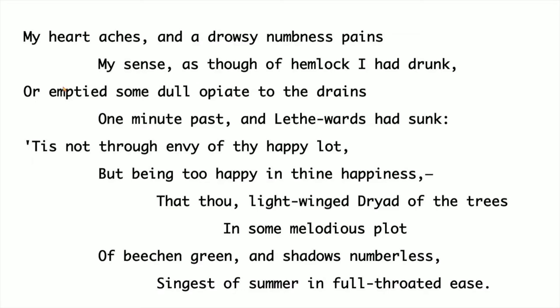In addition to the lexis — the choice of words — the contrasting elements of this stanza are signalled in other ways. For example, the alliterative D and DR sounds of 'drowsy,' 'drunk,' 'dull,' and 'drains' all work to create a sense of something heavy, pulling the poet downwards towards Lethe, the river of the underworld, while the nightingale is a light-winged dryad rising upwards.